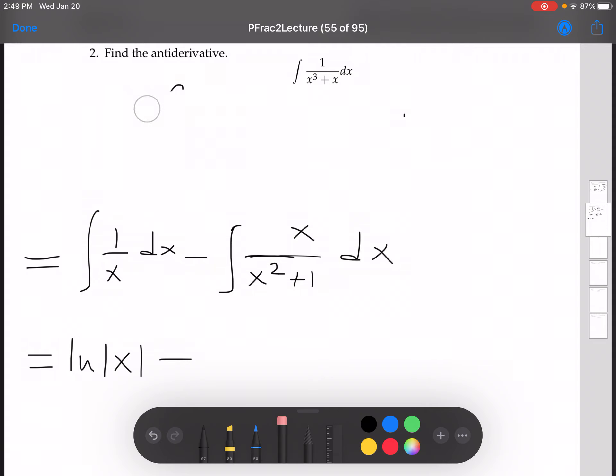So that tells me that's what I want to use, that's what I want to make into u. Okay, so let's do u equals x squared plus 1, then du is 2x dx. So du over 2 is equal to x dx.